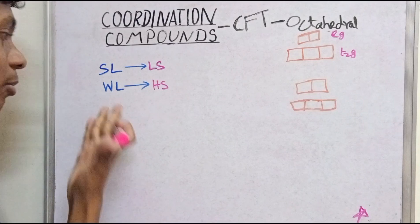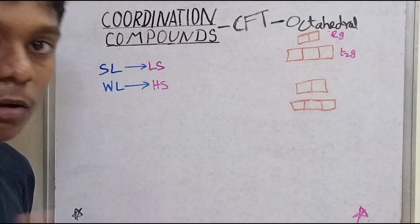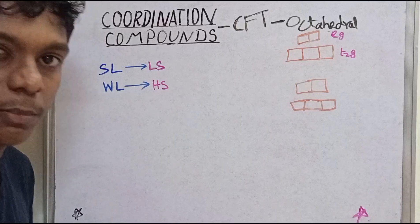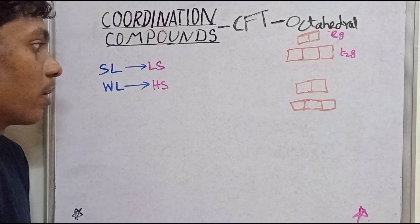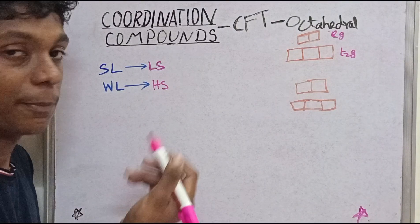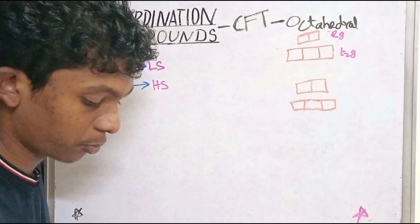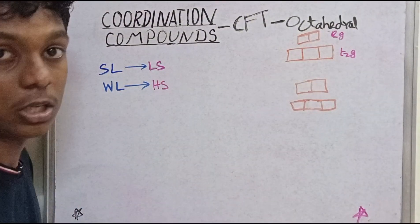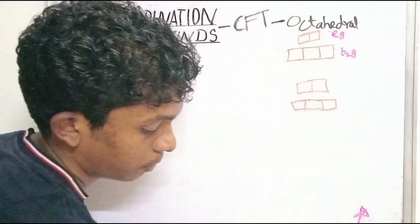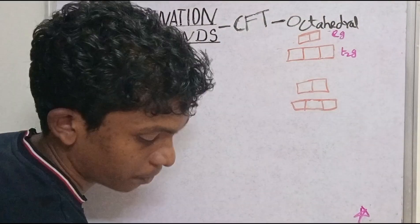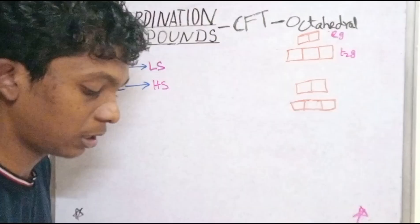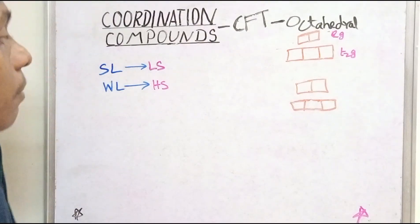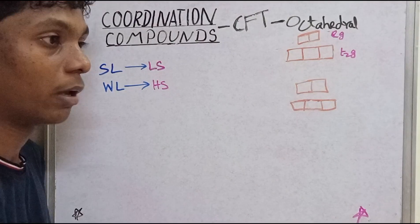HS is high spin, weak is weak ligand — you can use that. These are the basics. In our previous videos, we saw how strong ligand involves pairing cost. Strong ligand means pairing. That remains true. So now we will fill in any order.